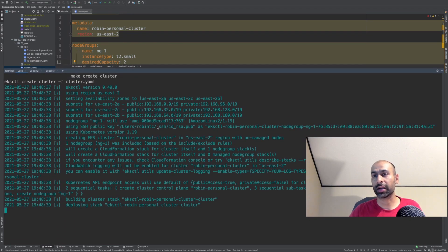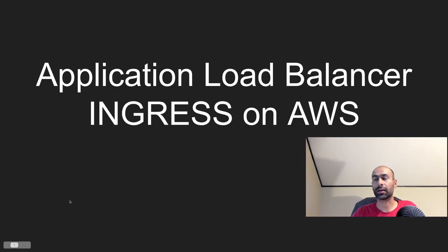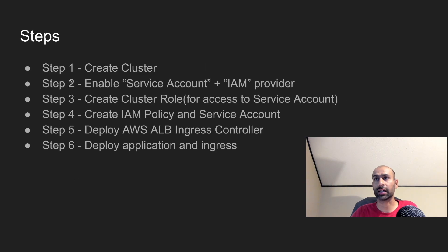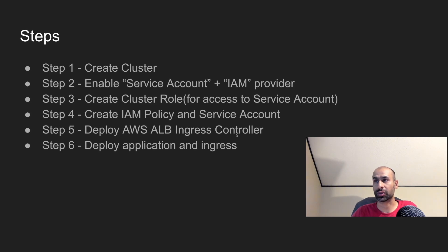It would take around 10 minutes for the cluster to be ready. While our cluster is coming up, let's look at the steps involved at a high level. The steps for setting up Application Load Balancer ingress are: first we create the cluster, then we create a service account and an IAM OIDC provider, which links IAM roles to the service account. Next we create a cluster role accessed by the service account, then we create the IAM policy and service account, deploy the AWS ALB ingress controller which listens on ingress configuration, and finally deploy our test application to see the ALB ingress in action.